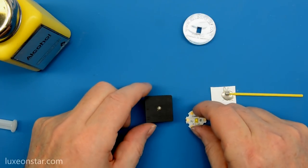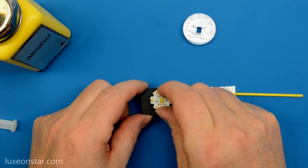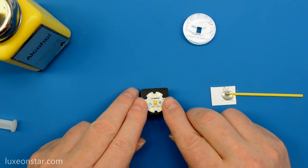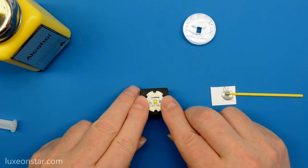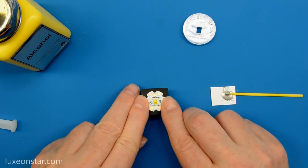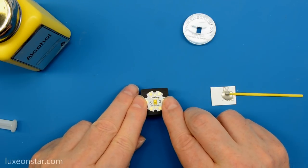Now you take your LED and you drop it right on top, and then carefully push it down. Line the LED to the center.